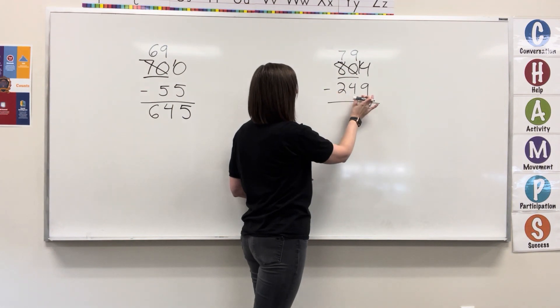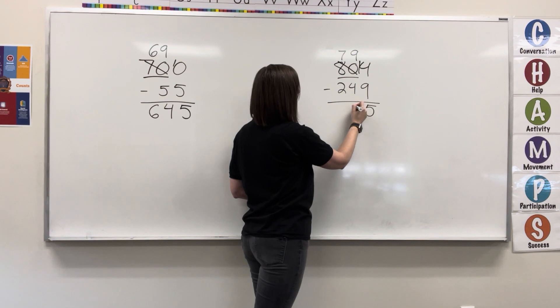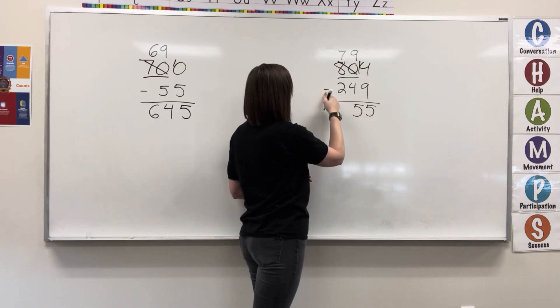14 minus 9 gives me 5. 9 minus 4 equals 5. 7 minus 2 equals 5.